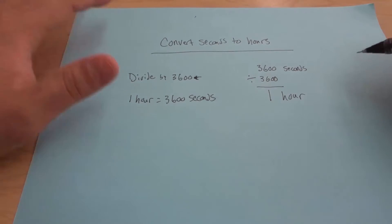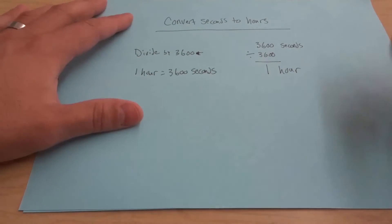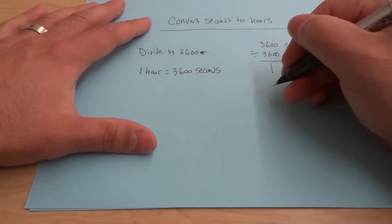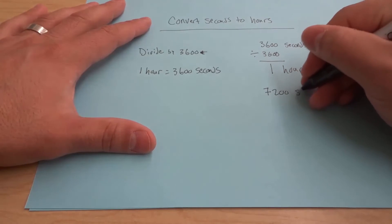So that's the most simple form, most simplistic form. But let's say I had a bigger number. Let's say, just to keep it nice and simple but a bigger number, let's say that I had 7,200 seconds.